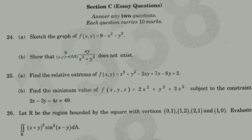Sketch the graph of f(x,y) = 9 - x² - y². This is a multivariable function and the graph will be shown. Show that the limit as (x,y) → (0,0) of xy/(x² + y²) does not exist. The limit will not exist — prove it using values along different paths.